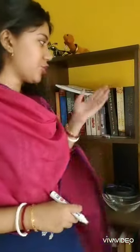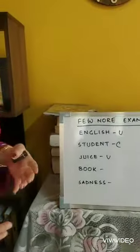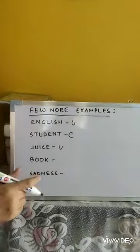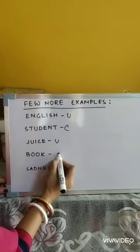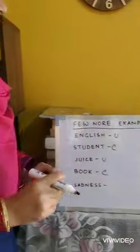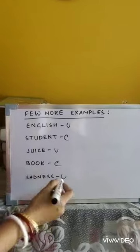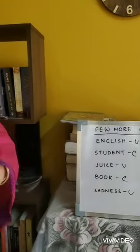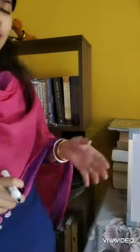Book — we can count books. We can say this shelf has many books, and we can add S or ES to it, so book is countable. Sadness — just like happiness, sadness cannot be counted, so sadness is uncountable. Now we will learn a few more uses of countable and uncountable nouns.